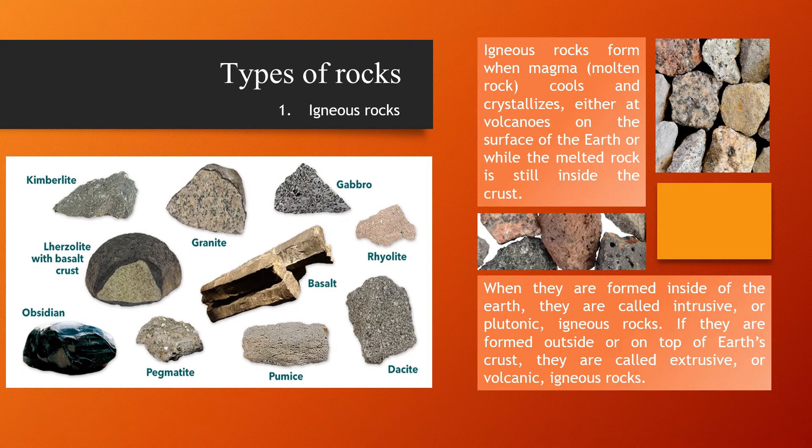Types of rocks. First, igneous rocks. Igneous rocks form when magma cools and crystallizes, either at volcanoes on the surface of the Earth or while the melted rock is still inside the crust. They are mostly crystalline, made up of interlocking crystals, and usually very hard to break. Igneous rocks can be formed in a couple of different ways. When formed inside the Earth, they are called intrusive or plutonic igneous rocks. If formed outside or on top of Earth's crust, they are called extrusive or volcanic igneous rocks.